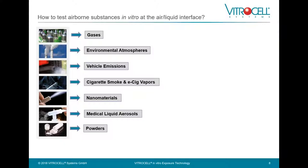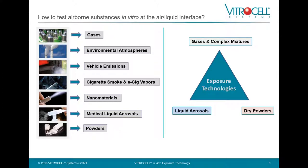You can test virtually all components available in an airborne state: gases, environmental atmospheres, chemical atmospheres, vehicle emissions, cigarette smoke, e-cigarette vapors, nanomaterials, medical liquid aerosols, and powders. We group those substances into three technology areas: gases and complex mixtures, liquid aerosols, and dry powders. Each class of technology needs its own way to bring the aerosols to the cell cultures.